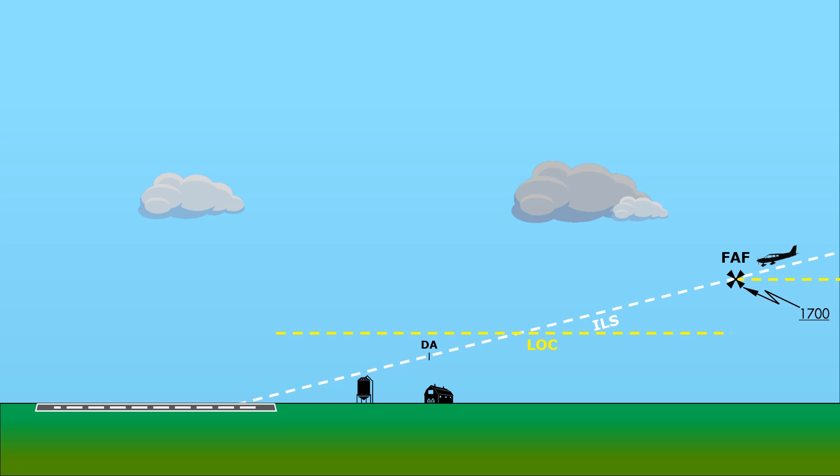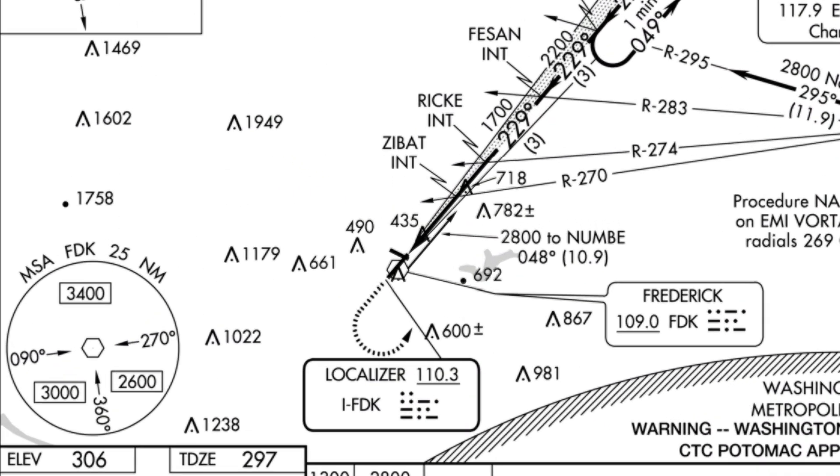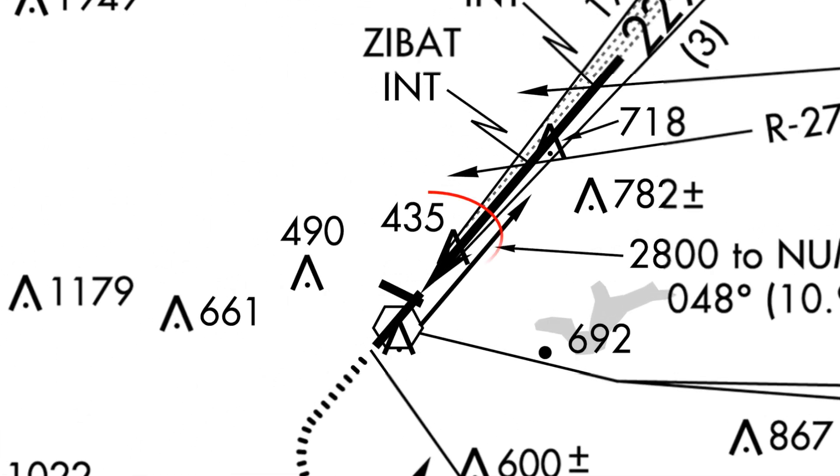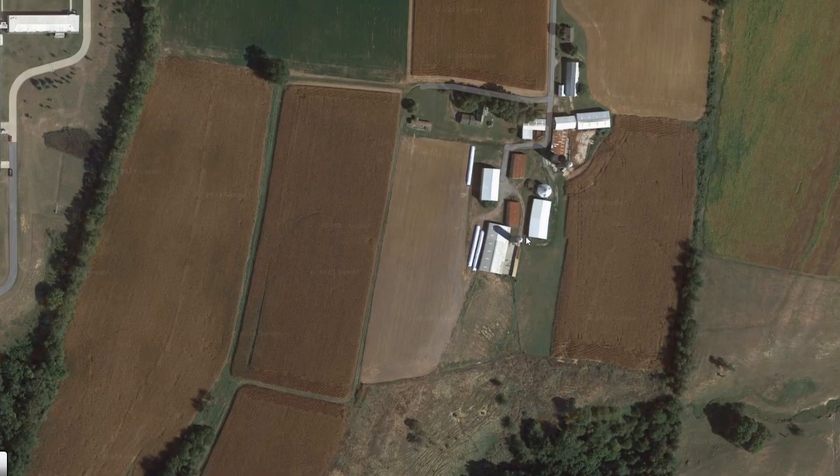Let's look at a real world example. This is the ILS into Runway 23 at Frederick in Maryland. Just like in our hypothetical example, there's an obstruction very close to the field on the approach path. Here's the approach end of Runway 23, and just a bit away from it is a silo.